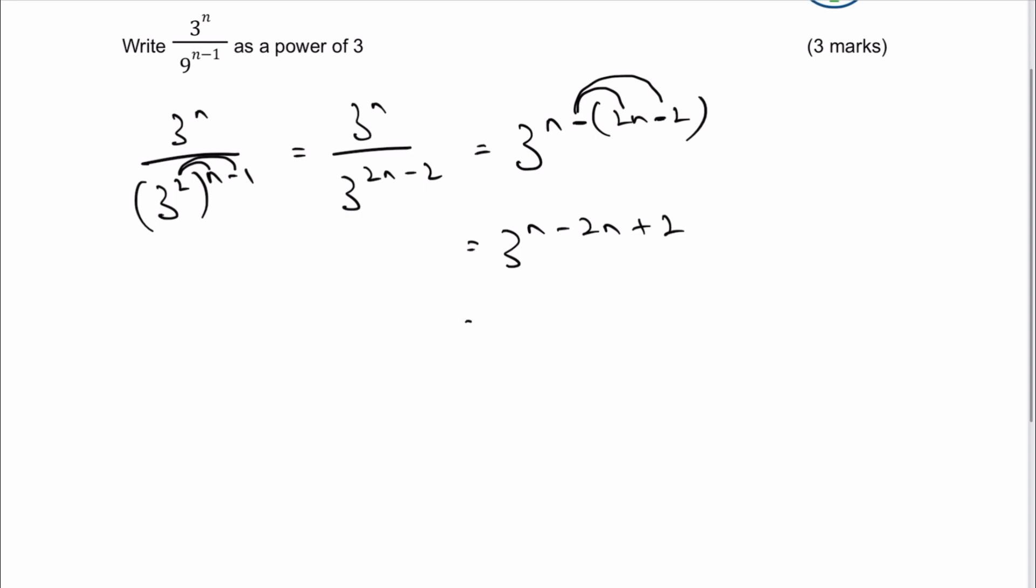Let's tidy that up a little bit. I'm going to get 3, and then I've got n minus 2n is exactly the same as saying minus n. And plus 2, I leave it on its own. And that actually is the answer to the question. It's just a little bit untidy, so it might make it a little bit better to write it out as 3 to the power of 2 minus n. And that would be the answer to the question.